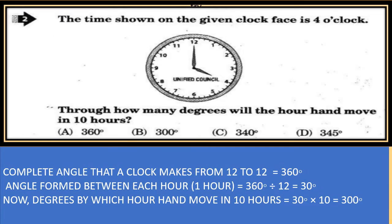The time shown on the given clock face is 4 o'clock. Through how many degrees will the hour hand move in 10 hours? We have to find by how many degrees the hour hand will move in 10 hours. The complete angle that a clock makes from 12 to 12 is 360 degrees.